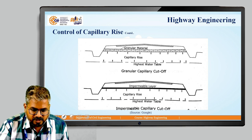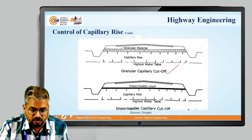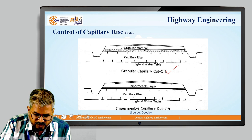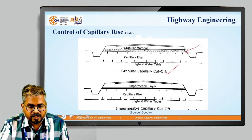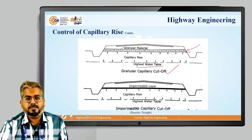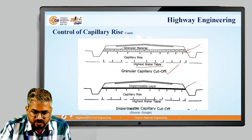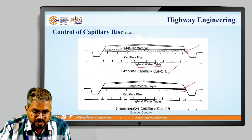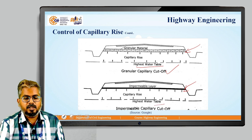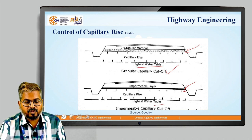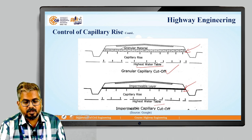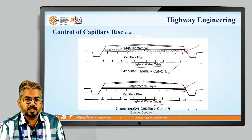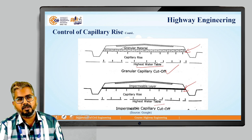Both types are shown here. First, the granular capillary cutoff — you can see the provision of granular material to avoid capillary rise, with the highest water table indicated. Similarly, instead of granular material, an impermeable layer is provided, and we can see the highest water table and the capillary rise kept in check by the provision of that impermeable layer. These are the two conditions for controlling capillary rise where moisture is present at the subgrade level.